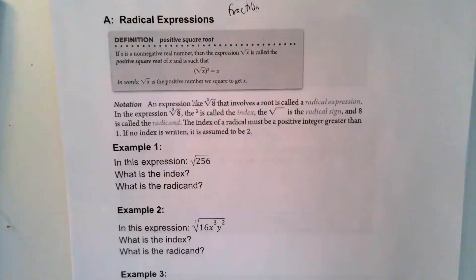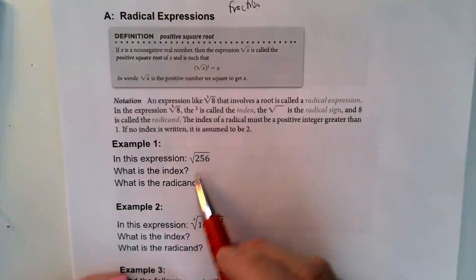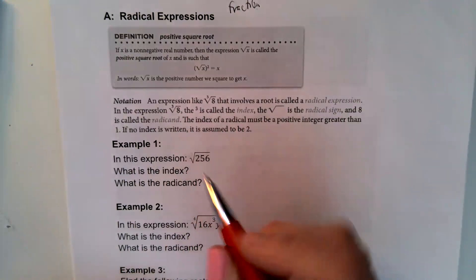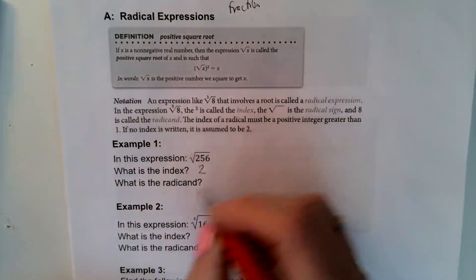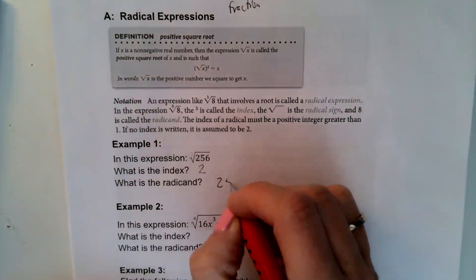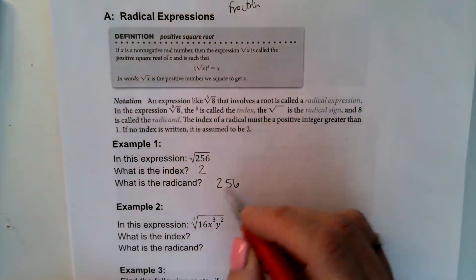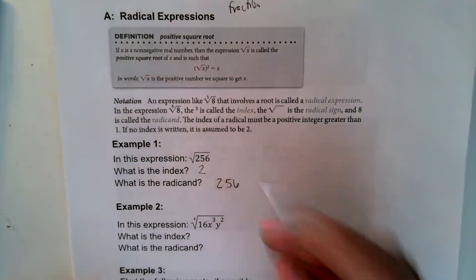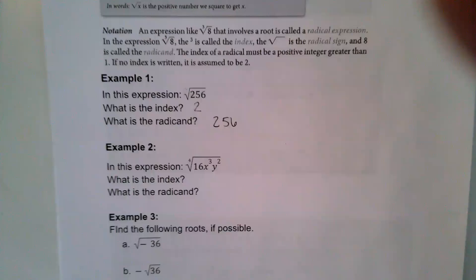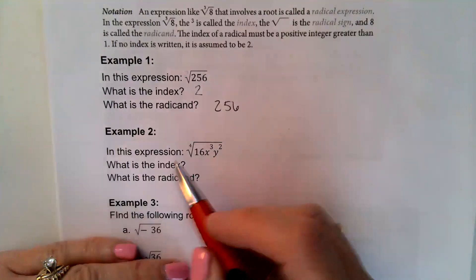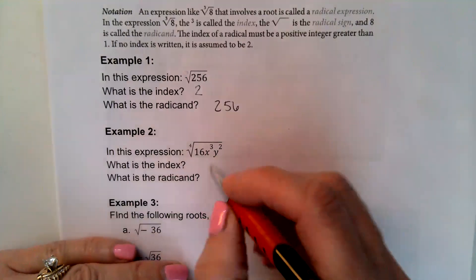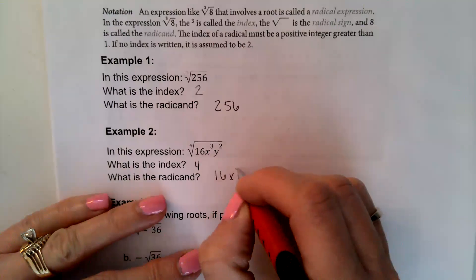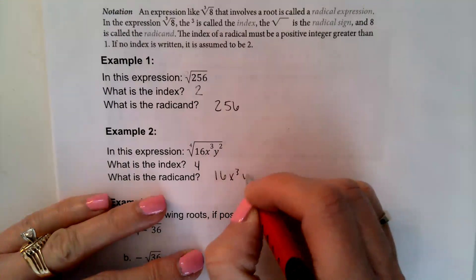Let's practice reading these. In the first expression, what is the index? When you don't see an index, it's always 2. What is the radicand? 256 — the radicand is the value underneath the radical symbol. Example 2: the index is 4, and the radicand is 16x cubed y squared.